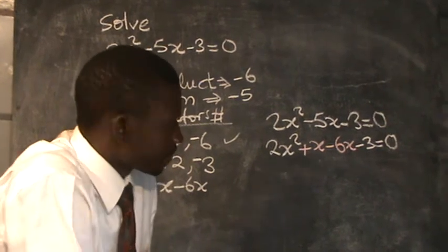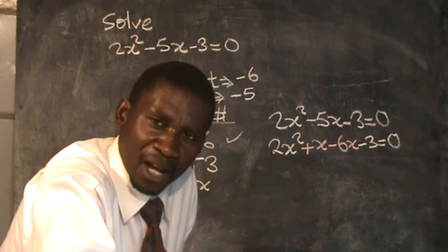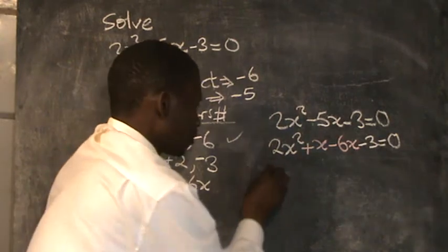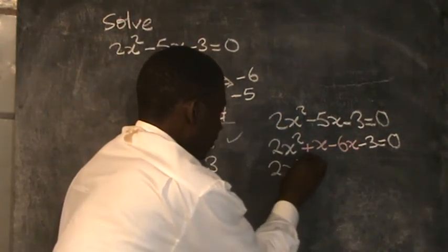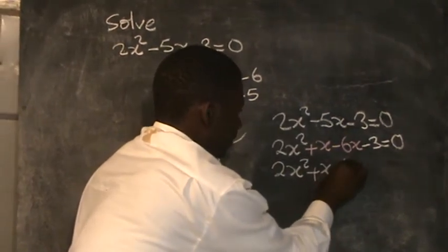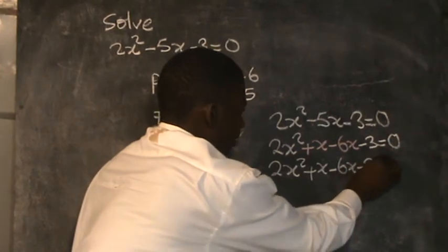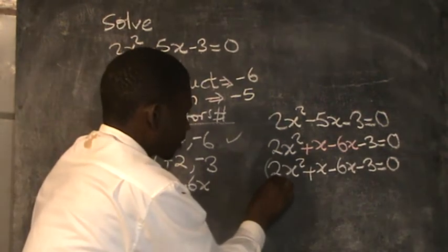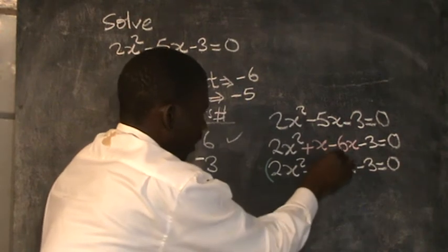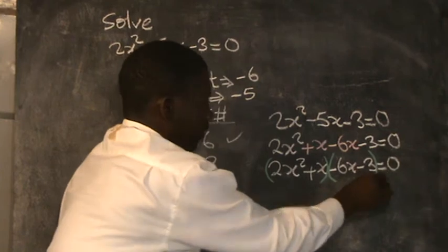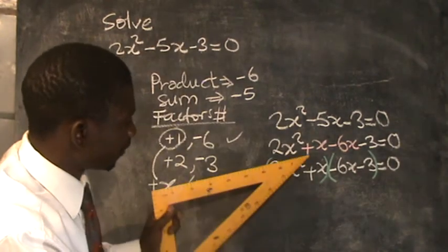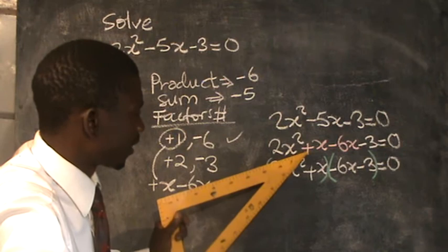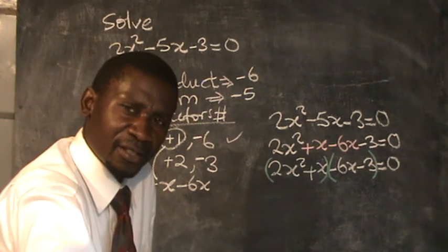This statement is repeated intentionally. So this is 2x squared plus x minus 6x minus 3 equals 0. Upon repeating, the terms are enclosed in two pairs of brackets: the first bracket contains the first two terms, and the second bracket contains the last two terms. By introducing the brackets, these two lines are now different — one has the brackets and the other does not.